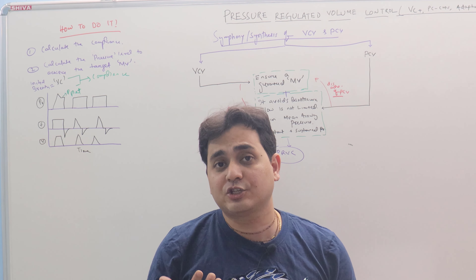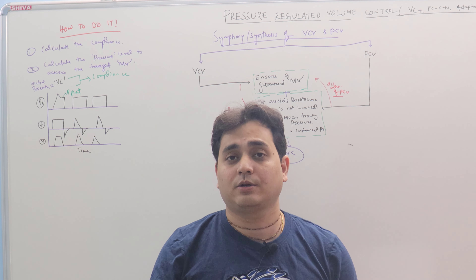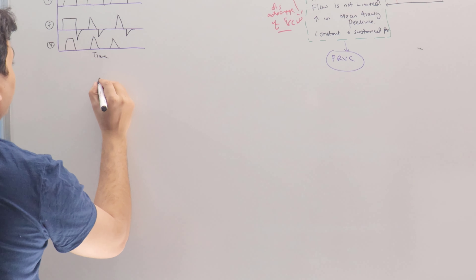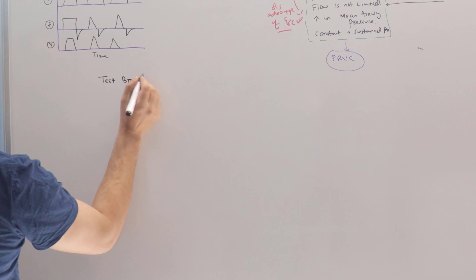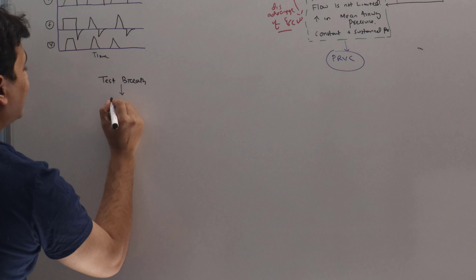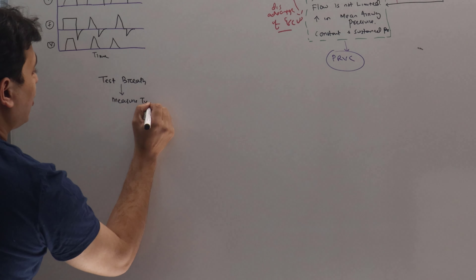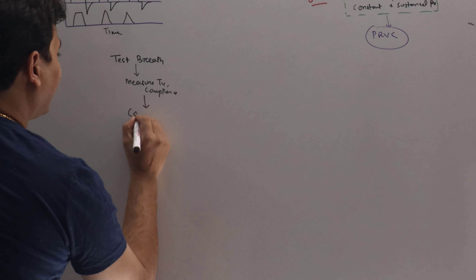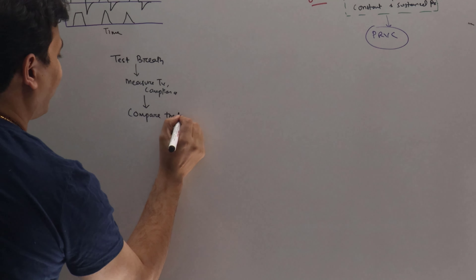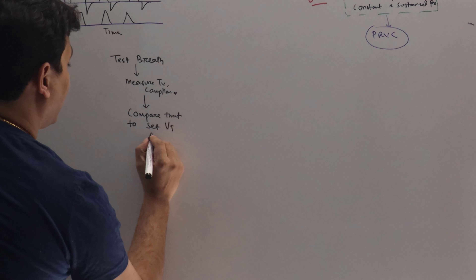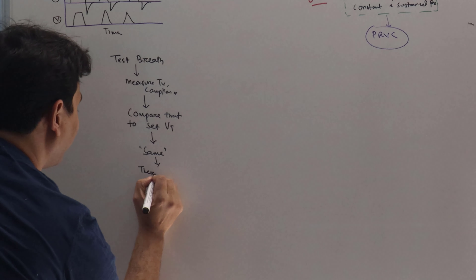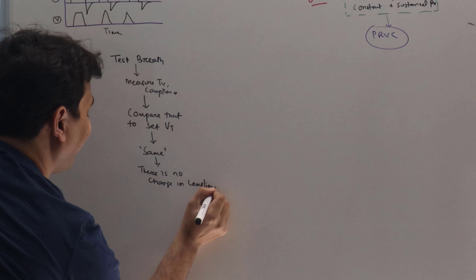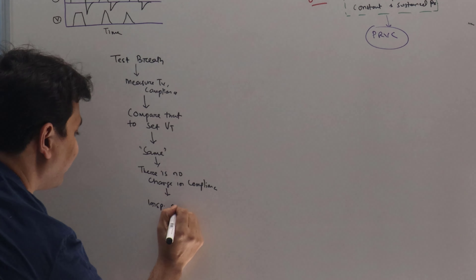Now we will discuss a very simple algorithm of how the ventilator decides the change in pressure depending on the change in compliance. You provide a test breath — as in here, the first initial breath is a test breath — and from there you measure the tidal volume and compliance. Now you compare that measured tidal volume to the set tidal volume. If it is the same, that means there is no change in compliance, so the inspiratory pressure remains the same.